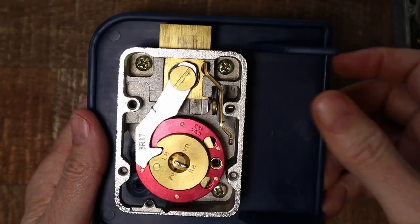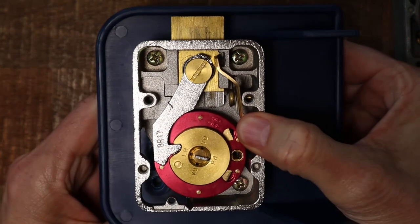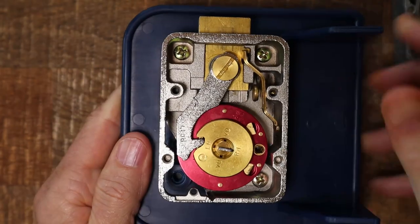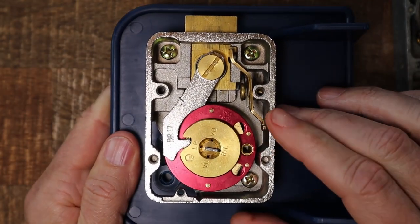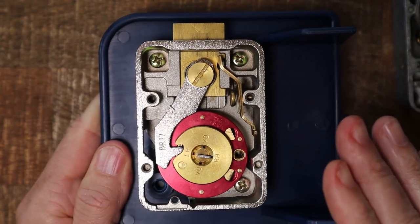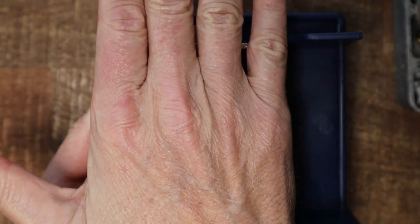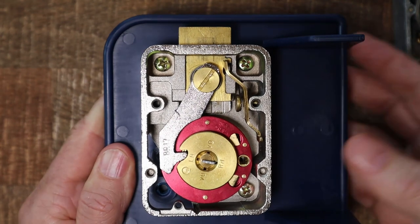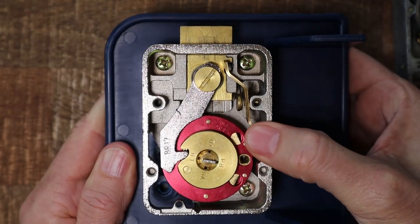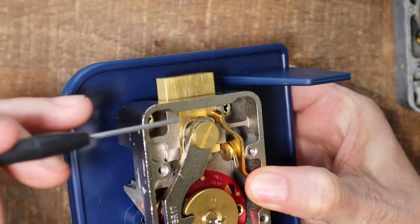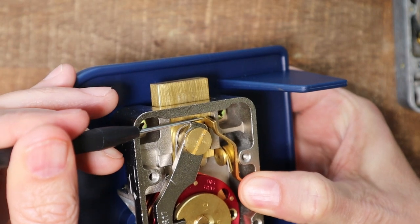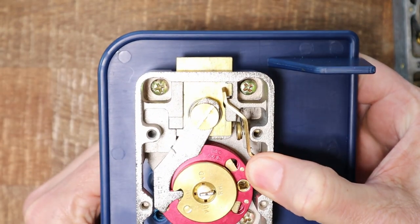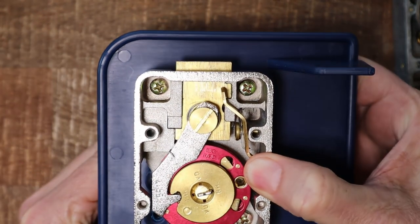I have to push this down in order to pull the bolt back. And why is that? This is actually a spring loaded re-locker. Now when this is installed in your safe, you have a back plate on this, and that back plate pushes this lever down so that this little piece of metal stays clear of the bolt and you can pull the bolt back.